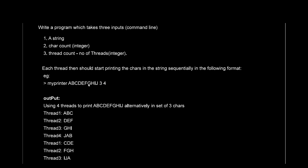These four threads will execute and print the characters of the string. Thread one will start executing and print the first three characters: abc. Thread two will print the next three characters: def. Thread three will print ghi. Thread four will start printing and the next character is j. After that, we've reached the end of the string, so we roll back to the first position.